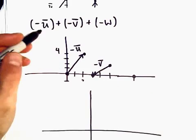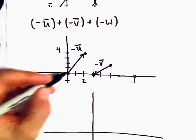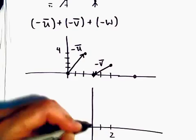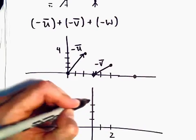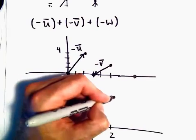Okay, so if we do negative u, again if I start at the origin I would end up at the point two comma four, I would end up right there.